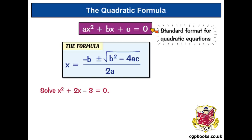Now, it's a good idea to jot down the values of a, b and c. But before we do that, let's just check it's in the standard format. So we've got an x squared term, then an x term, number term, equal to zero. That's all fine.